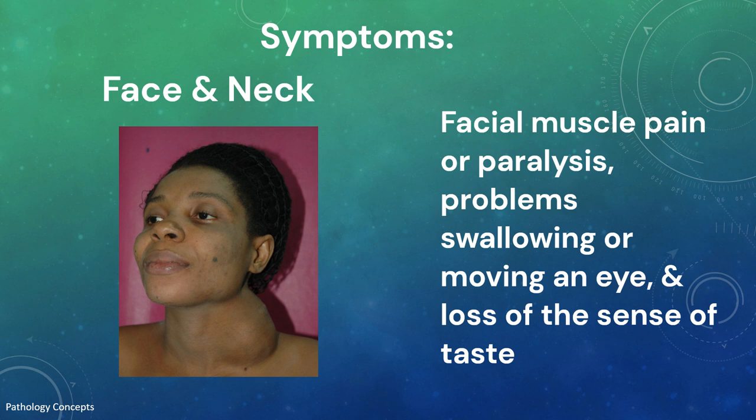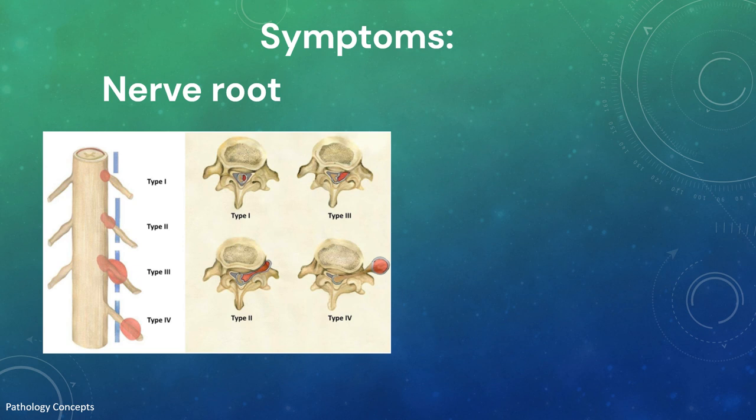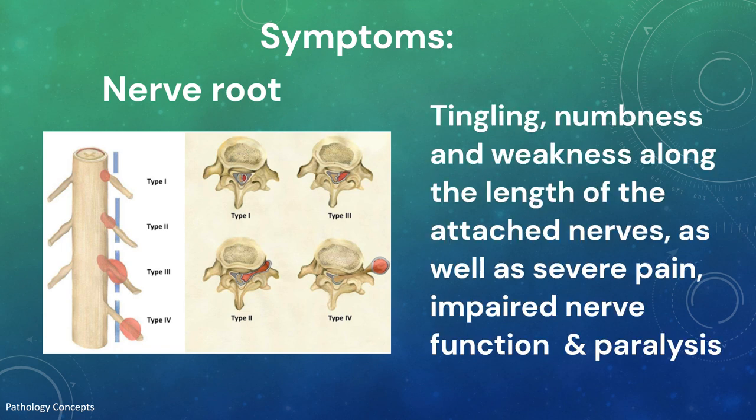Facial schwannomas can also cause loss of sense of taste. When schwannoma grows on a nerve root exiting the spinal cord, it can cause symptoms similar to those associated with spinal problems such as herniated disc. Large nerve root schwannomas in the neck or spine can cause tingling, numbness, and weakness along the length of attached nerves, as well as severe pain, impaired nerve function, and even paralysis.